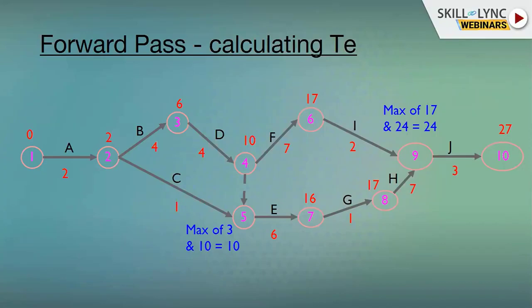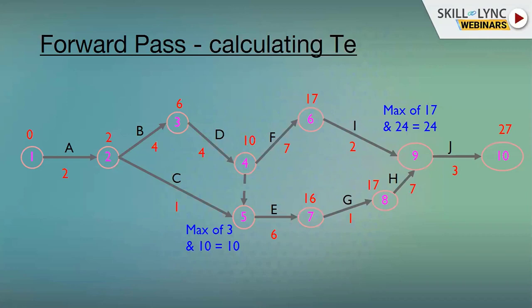Now our paths diverge: two plus four gives event three a time of six; C means an event time of two plus one equals three at event five. But event five marks the start of activity E, and activity E cannot start until activity B finishes — so six plus four equals ten. The TE for event four will be transferred to event five via the dummy activity with zero timeline, so at event five we have two TEs: three and ten.